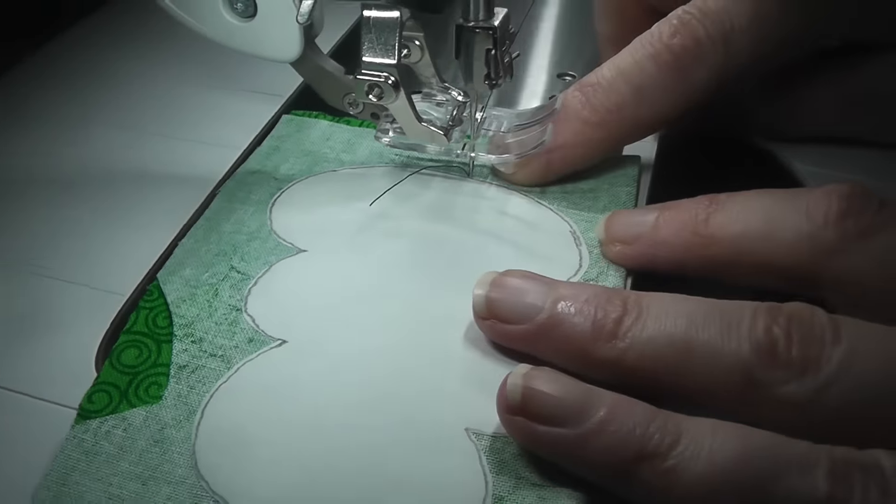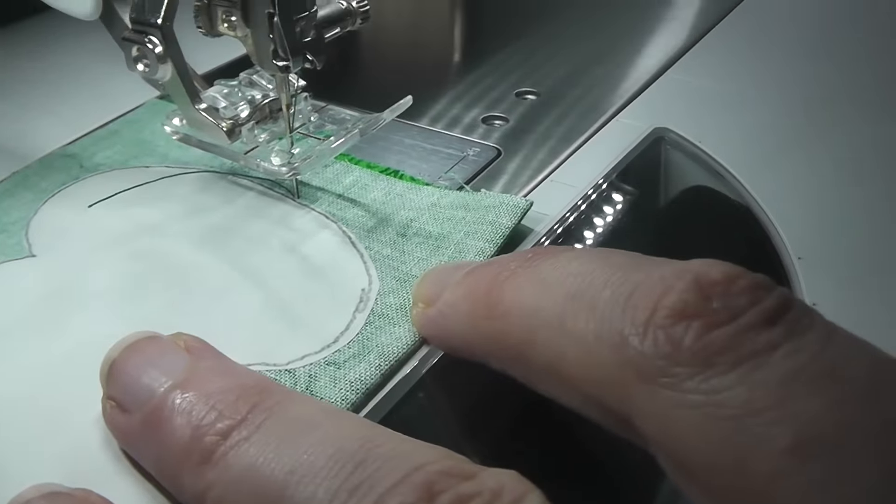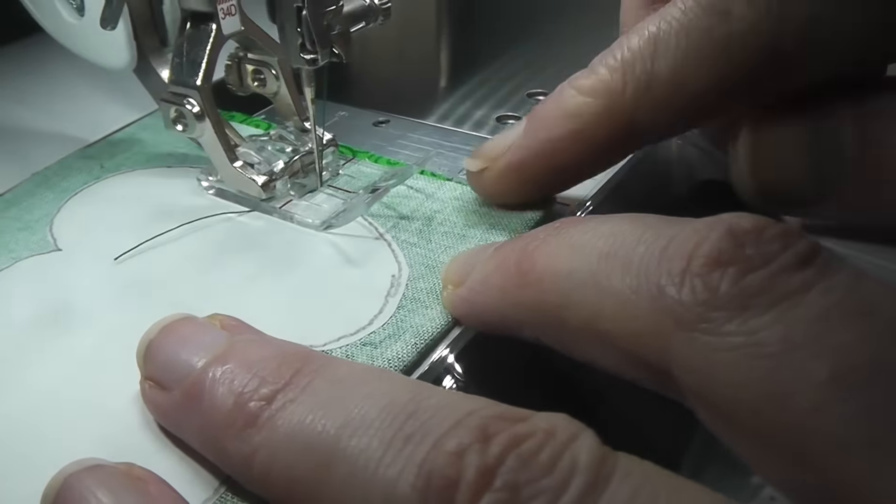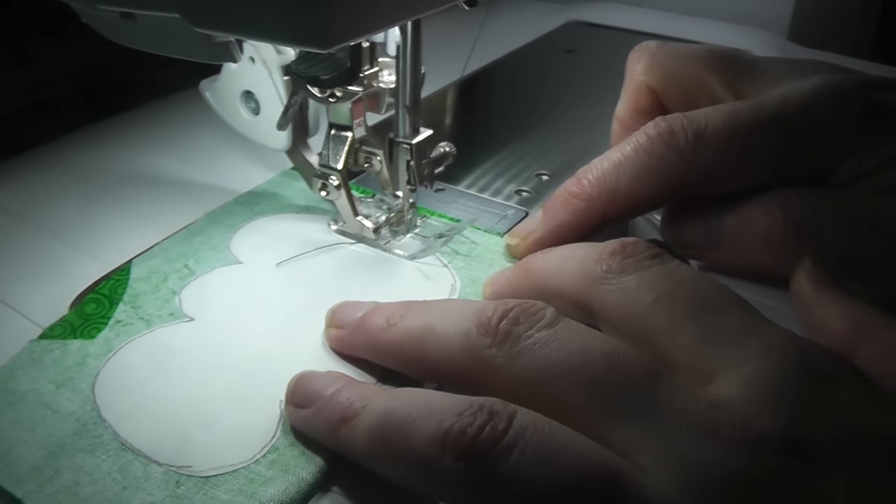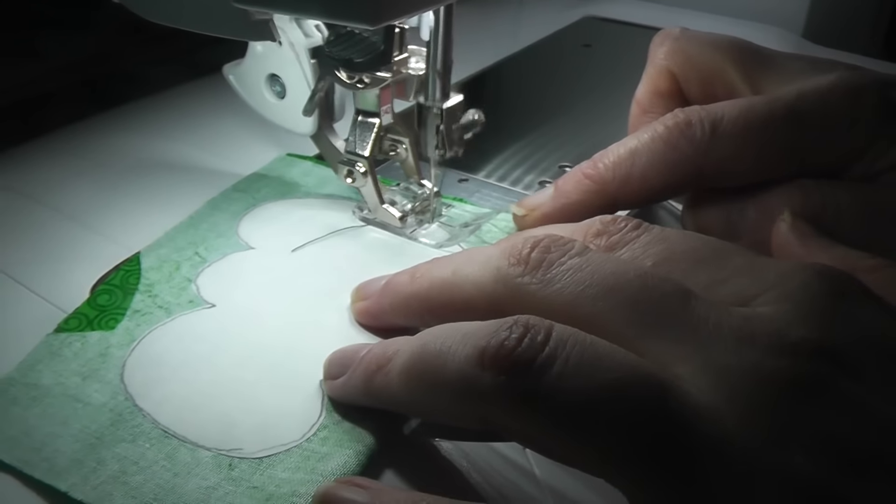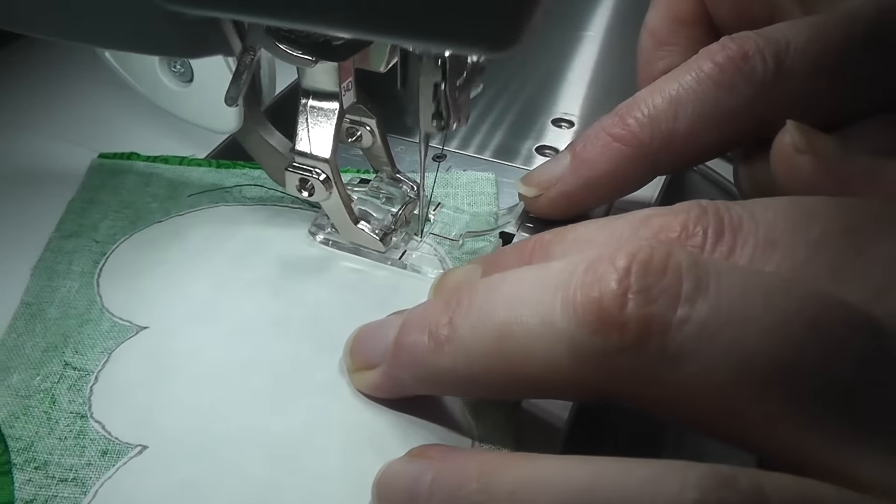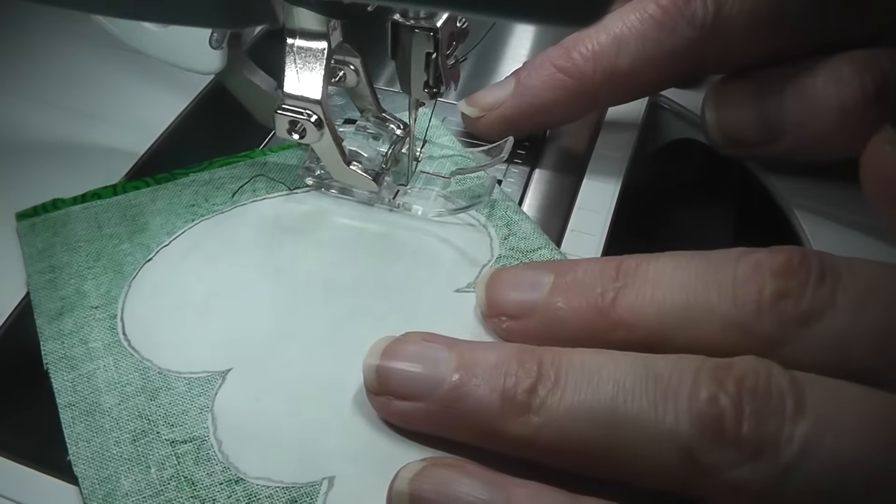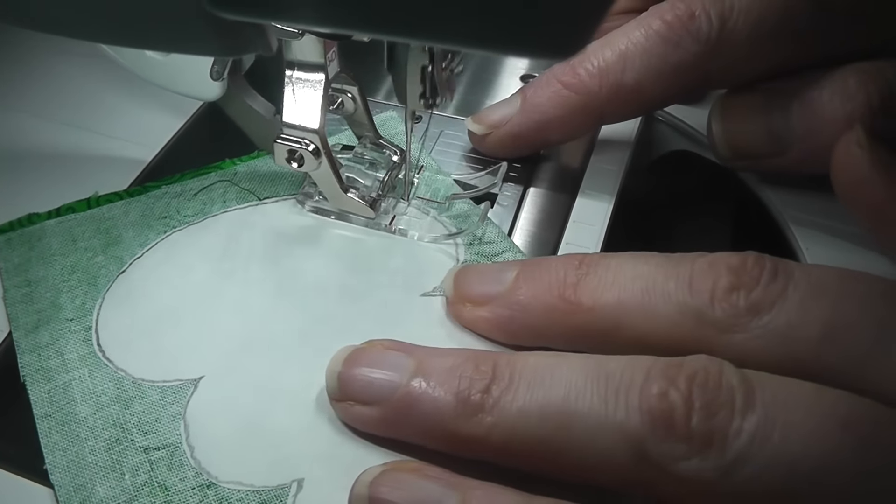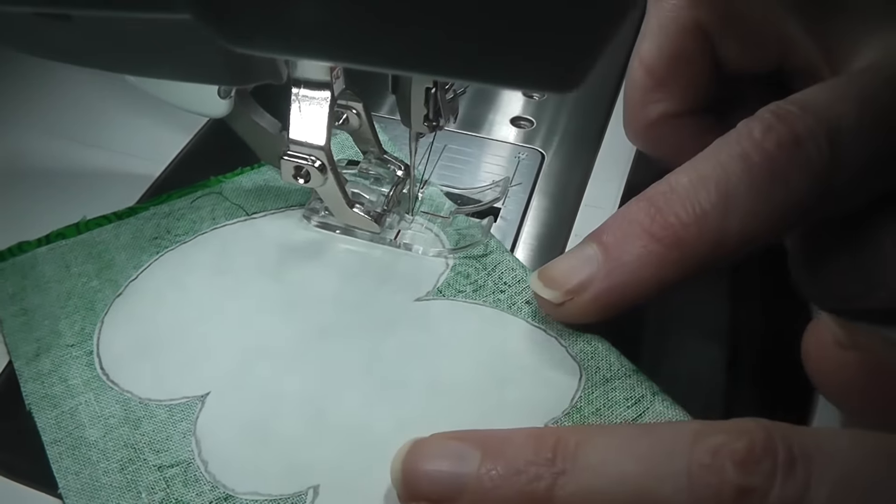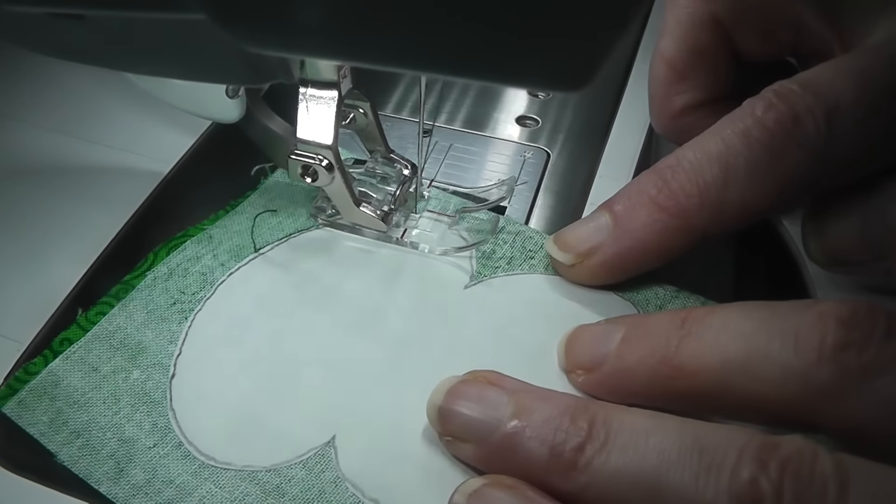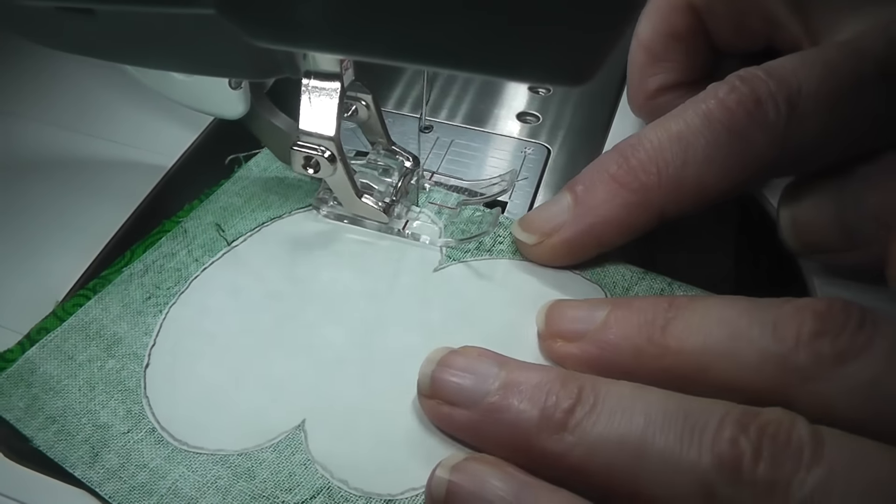I always start and stop my sewing on the straightest piece of the shape that I can find because that makes it the easiest to match up my end with the beginning smoothly. So I buried my needle right along the edge of that freezer paper. Now I'm going to lower my presser foot and just very slowly sew all the way around this piece.